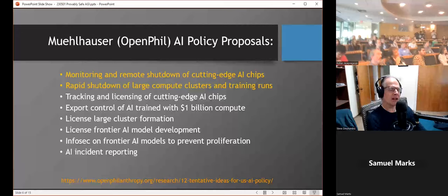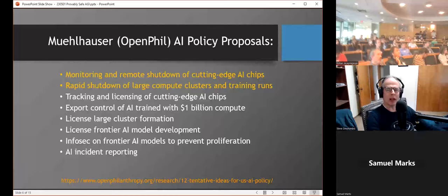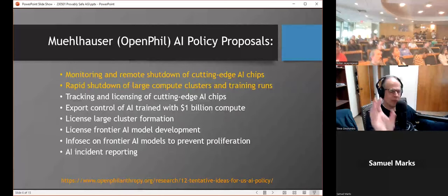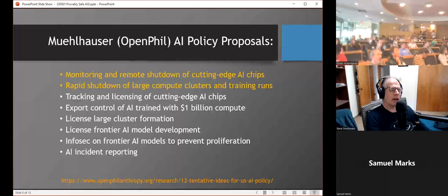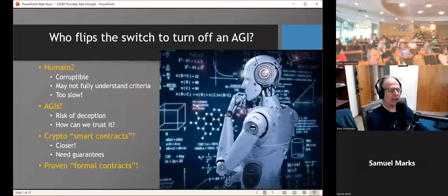Luke Muehlhauser at Open Philanthropy recently suggested some AI policy proposals. The two that I think are especially relevant here are that there should be monitoring and the possibility of remote shutdown for cutting-edge AI chips, maybe like an NVIDIA H100. And large compute clusters and training runs of large AIs should also be externally monitorable and allow rapid shutdown.